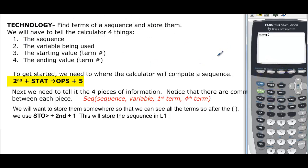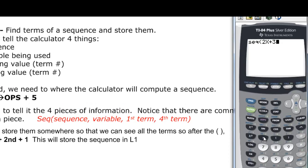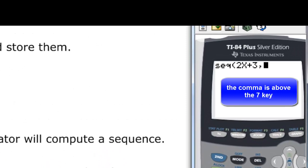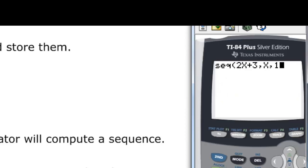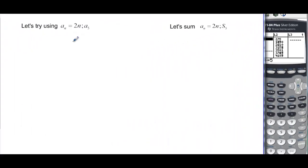Let's use the sequence we had before, which was 2n plus 3. We put in 2x plus 3, then a comma, then x for the variable, then comma, 1 to start, then 4 for the last term number, and close the parentheses. And we have 5, 7, 9, 11 — exactly what we calculated by hand.